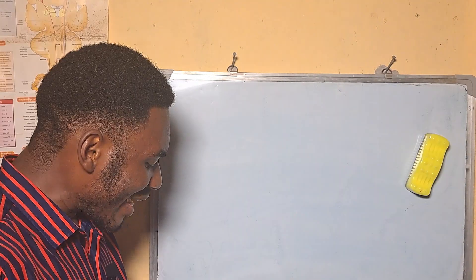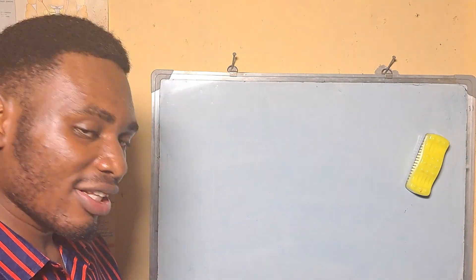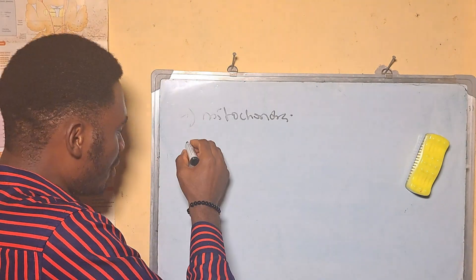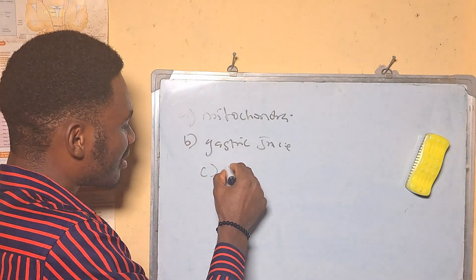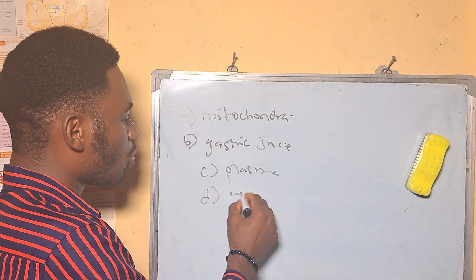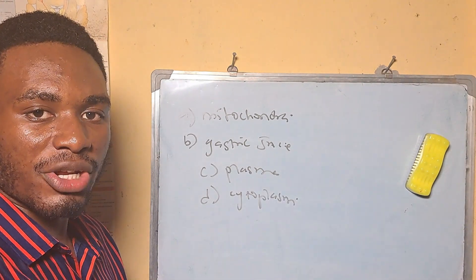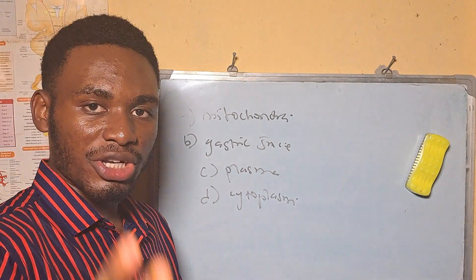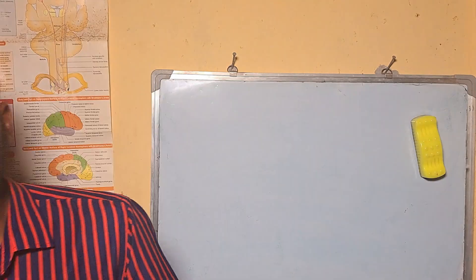The enzymes of the glycolytic pathway are found in — A: mitochondria, B: gastric juice, C: plasma, D: cytoplasm. Glycolysis is the first stage of cellular respiration and it occurs in the cytoplasm, so the answer is D, cytoplasm.